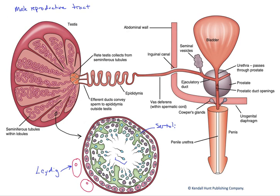The male gonad, the testes, develop within the abdominal cavity and pass across the abdominal wall through a canal — the inguinal canal — and then the testes will actually reside in the scrotum, as shown here on the left.